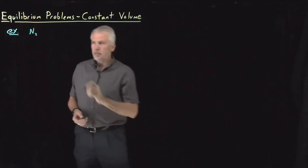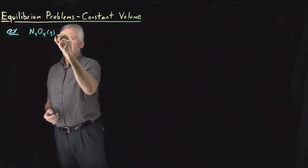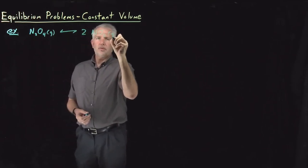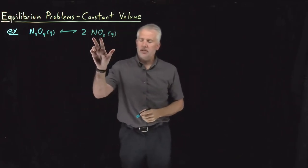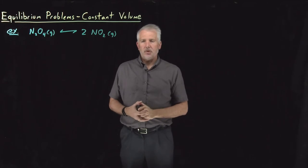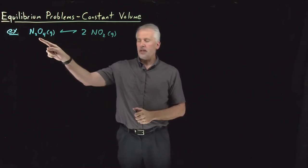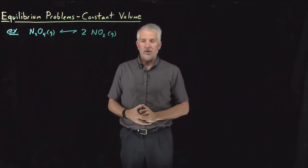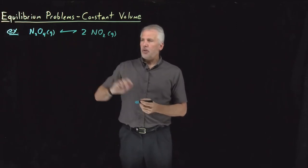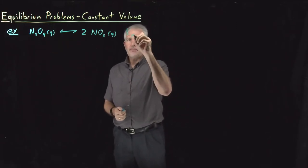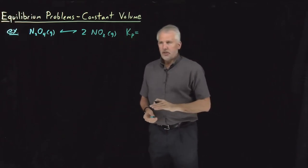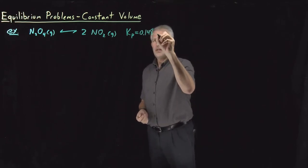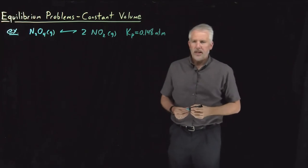And instead of our gas phase bromine or HBr examples, let's use an example that's a little bit more of an equilibrium. We're going to do the decomposition reaction of dinitrogen tetraoxide. So as you may be aware, nitrogen dioxide dimerizes under typical conditions. Two NO2 molecules can dimerize and form an N2O4 molecule or likewise an N2O4 molecule can decompose into two NO2 molecules. So that reaction is a bona fide equilibrium. Its equilibrium constant under conditions of 298 Kelvin is 0.148 atmospheres.